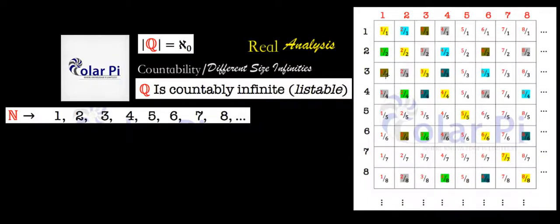Likewise, if you decide to count them down this column, you'll never get off this column. Because after 1 over 8 is 1 over 9 and 1 over 10, and that'll go on ad infinitum. And so, Cantor's clever method is this.